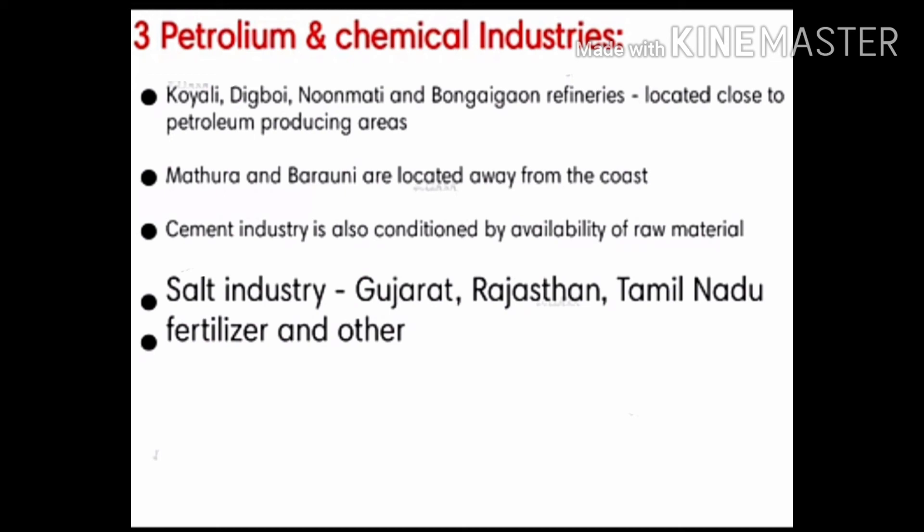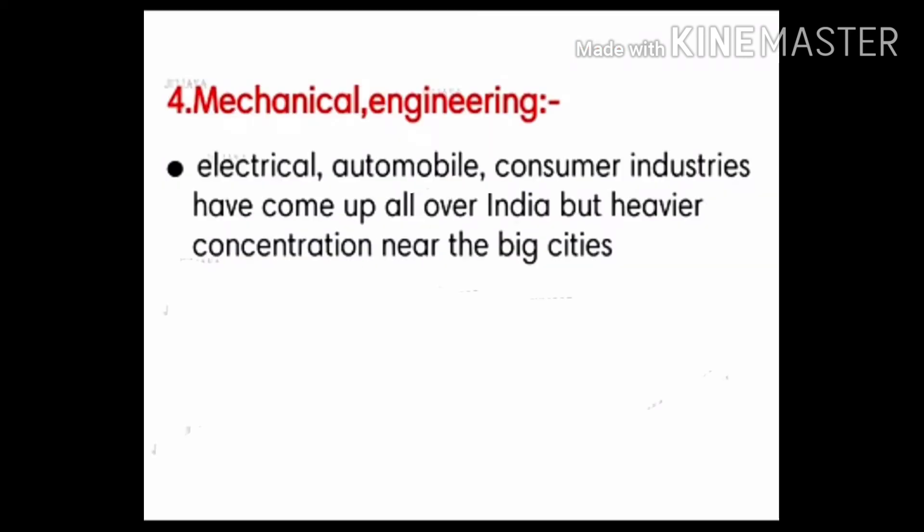The third category is petroleum and chemical industries, producing petroleum and oil products. Key locations include Digboi in Assam, Koyali and Kalol in Gujarat, and Mathura and Barauni, which are located away from the coast. Cement industries depend on availability of coal as raw material. Salt industries are mainly in Gujarat and Tamil Nadu. Fertilizer and other chemical industries are found in various parts of India. The fourth category is mechanical and engineering goods — electrical gadgets, automobiles, and consumer industries — which come up all over India but mainly near big cities.